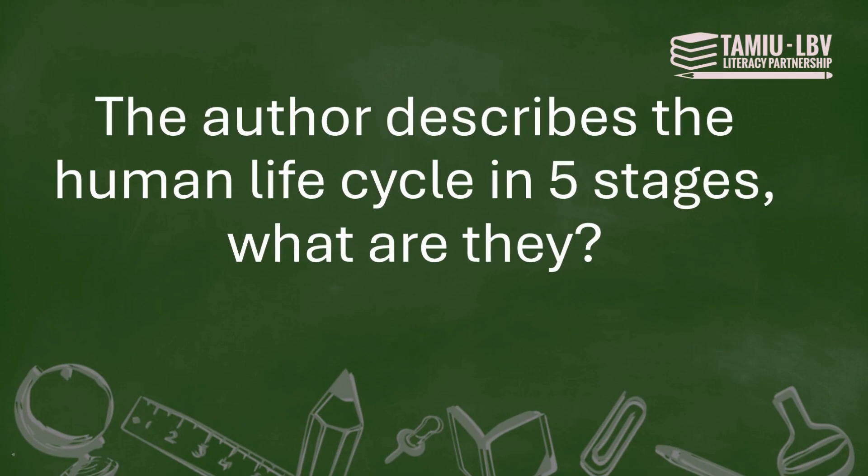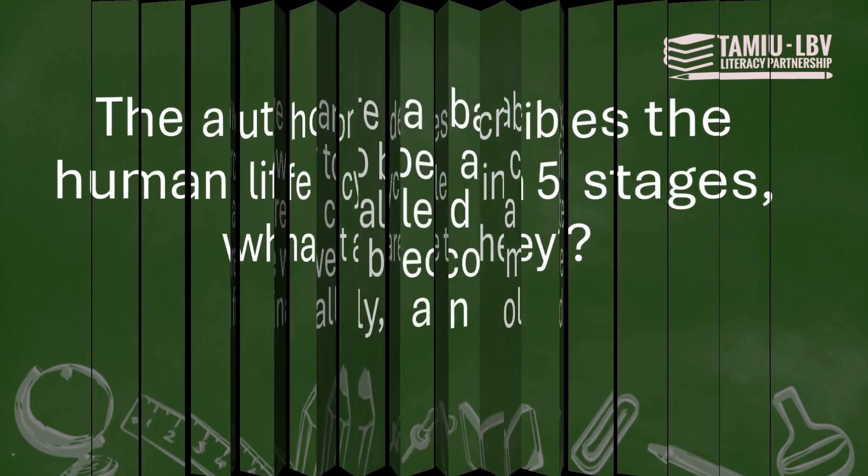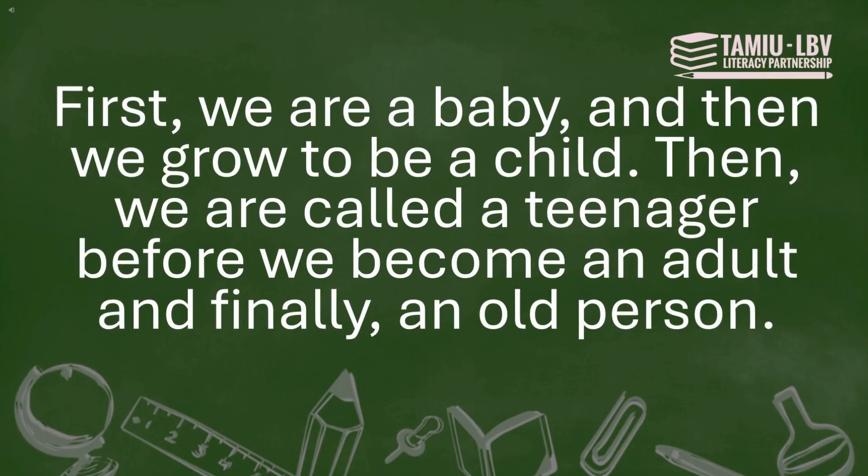The author describes the human life cycle in five stages. What are they? First we are a baby, and then we grow to be a child. Then we are called a teenager, before we become an adult and finally an old person.